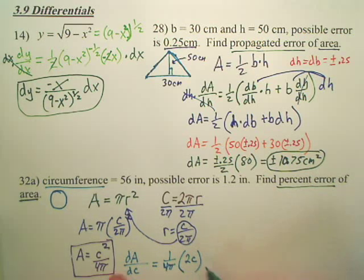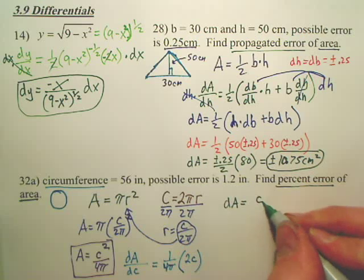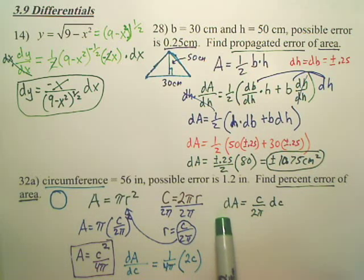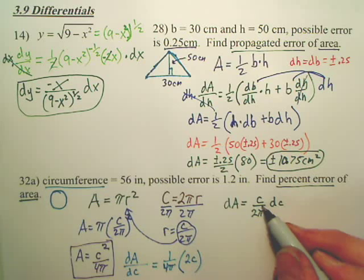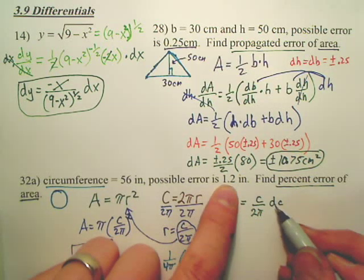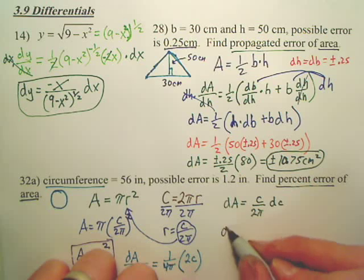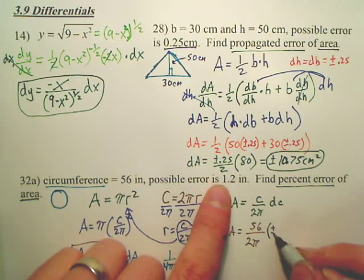Now can I multiply both sides by dC? And I now have dA equals c over 2 pi dC. What are we trying to find? The percent error. So don't we need the propagated error first? The amount of error off? I want this. Do I know a c? Yeah. But what's this 1.2? Is that dC? Isn't that the possible error, the change of my circumference? Is that correct? So wouldn't dA be equal to 56 for circumference over 2 pi, and isn't my change on circumference going to be plus or minus 1.2?